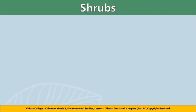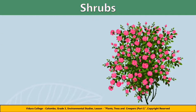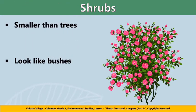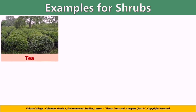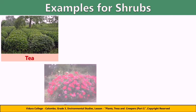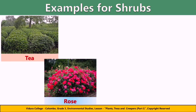Next, we are going to learn about shrubs. A shrub is a woody plant which is smaller than a tree and has several main stems arising at or near the ground. Here are some examples for shrubs. The tea plant is branching with alternate elliptical leaves; the leaves and leaf buds are used to produce tea. The rose plant — many roses have a strong, pleasant scent, and most roses have prickles on their stems. Rose shrubs are able to tolerate a wide variety of growing conditions.